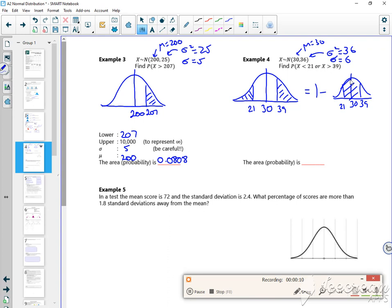So if I set my lower to be 21, my upper to be 39, my sigma to be 6, my mu to be 30, that would give me the probability that it's between